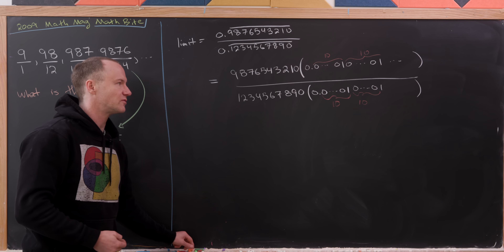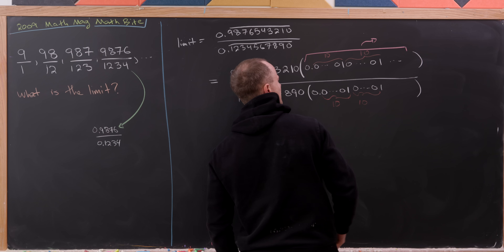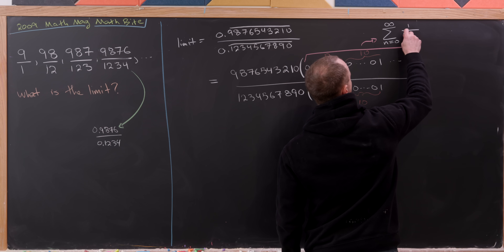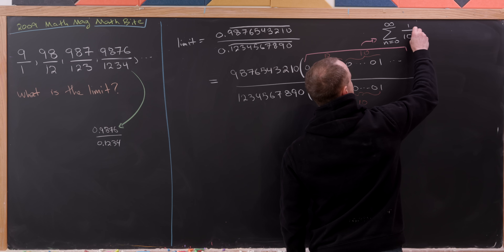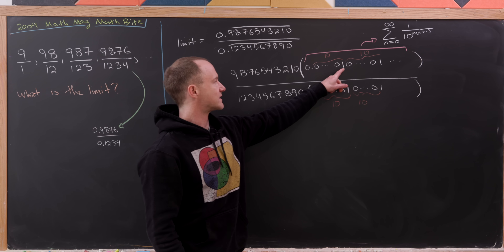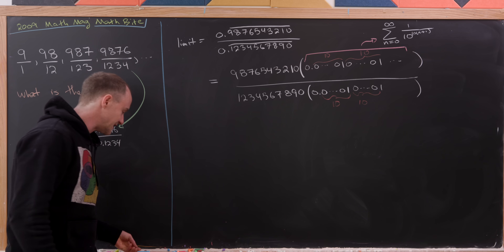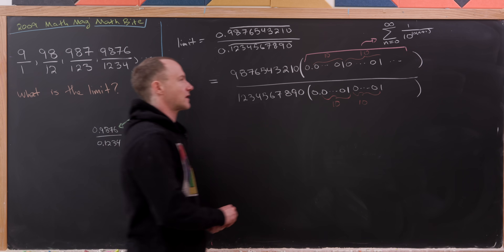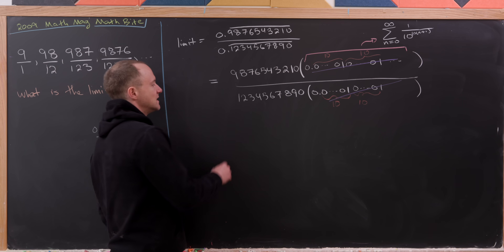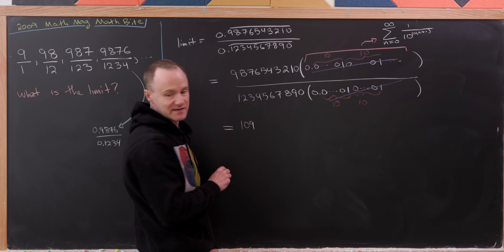We could write the numerator using geometric series: the sum as n goes from 0 to infinity of 1 over 10 to the 10n plus 1. The n equals 0 term gives the first 1, the n equals 1 term gives the next 1. But we don't actually need to do that because the corresponding term in the numerator cancels the term in the denominator, leaving us with the following expression.